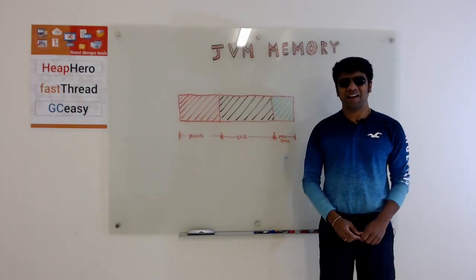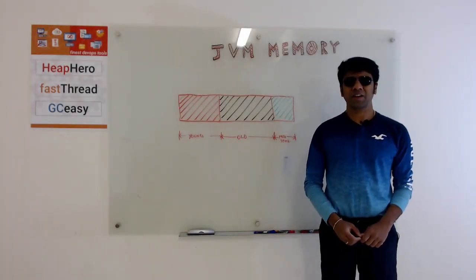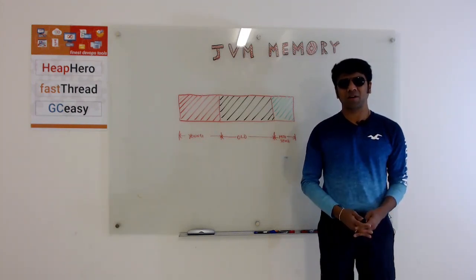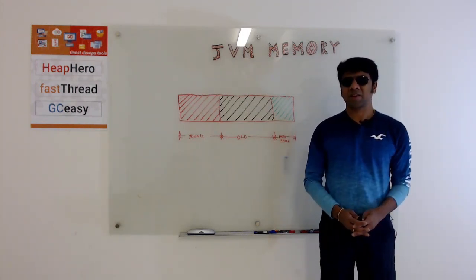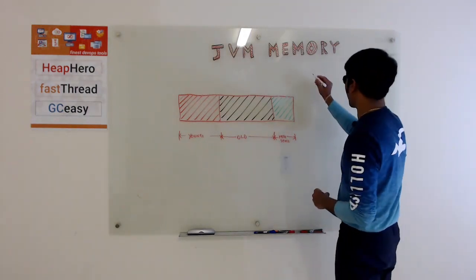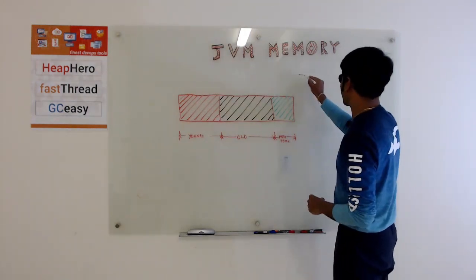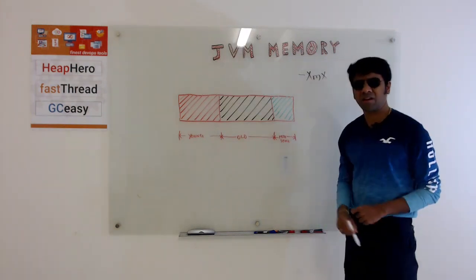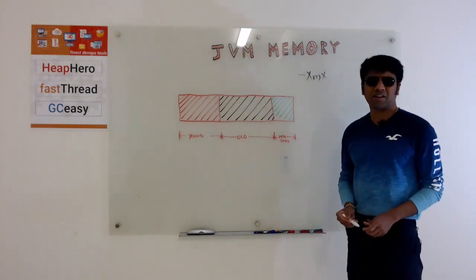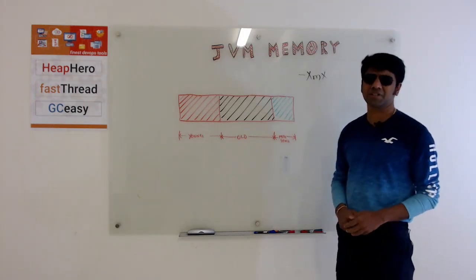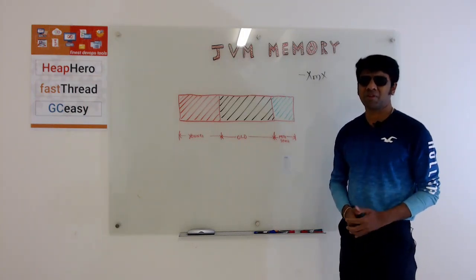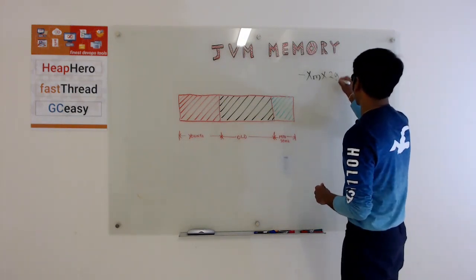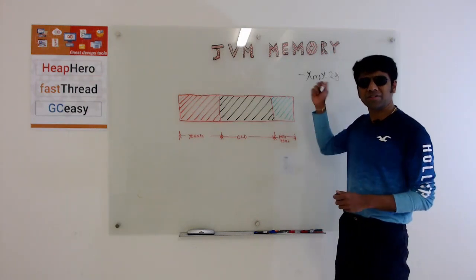Hello friends, I'm Ram Lakshmanan. Today we are going to learn about JVM memory model. You guys have seen this property XMX. This property defines the maximum heap size of your JVM. You can set it to 2 gig, 4 gig, or whatever size.